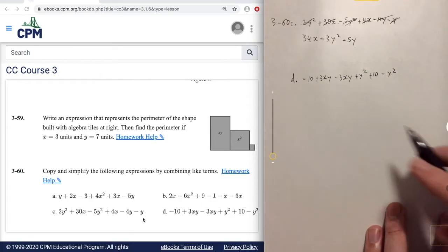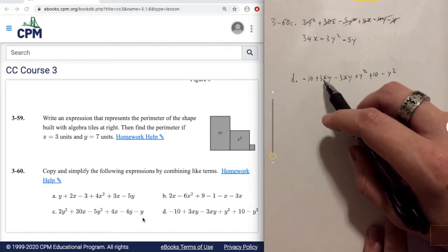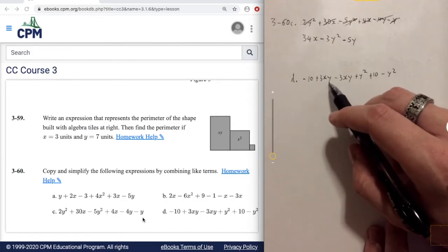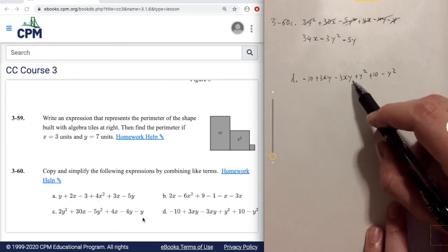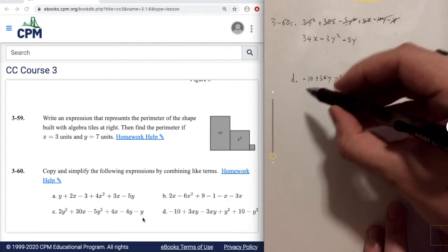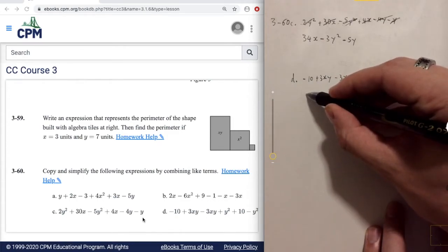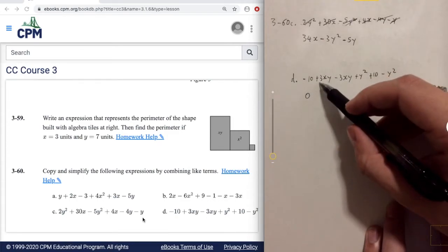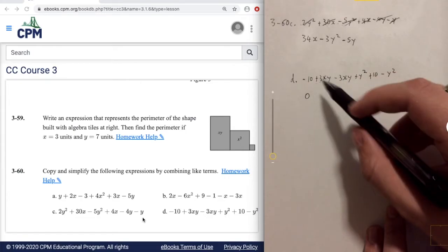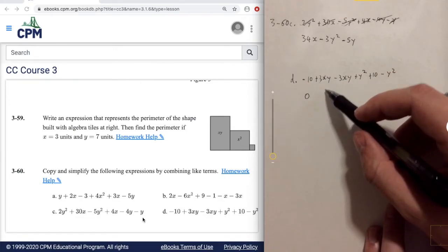So let's start by grabbing, let's go with the xy's first. So we have a positive 3xy and we also have a negative 3xy. So if we combine those, we'll end up with actually nothing. Because we have just as much in the positive as we do in the negative. So they cancel out and we'll get zero right there.